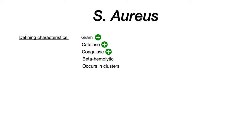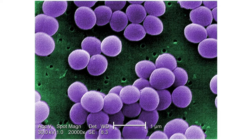Staphylococcus has the word coccus in the name. Coccus, or the plural cocci, refers to a round-shaped bacterium. So if you see this image on your exam — on USMLE, on COMLEX — these are what cocci look like. A coccus is a single round spherical shape; cocci is what you see in Staphylococcus, or Staphylococci.